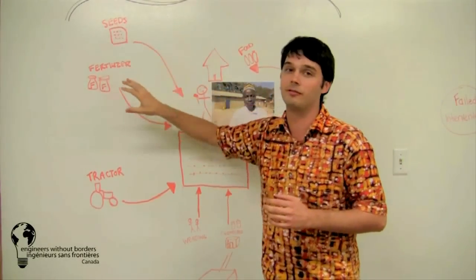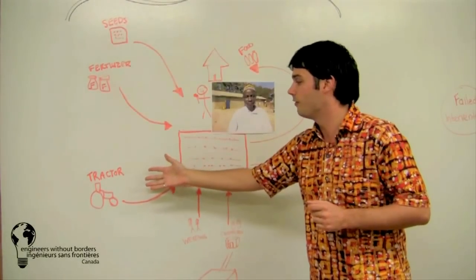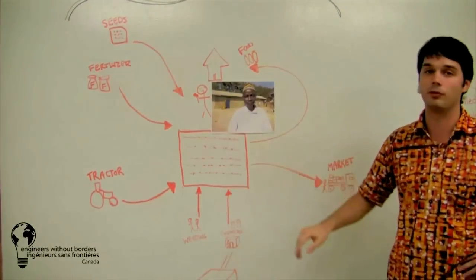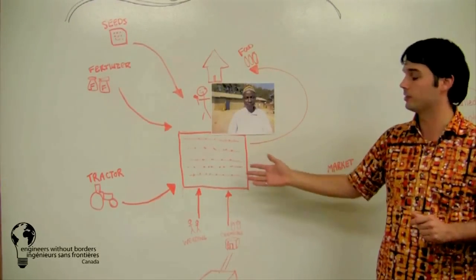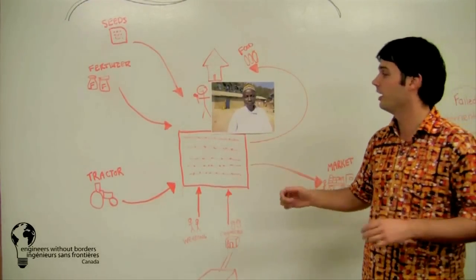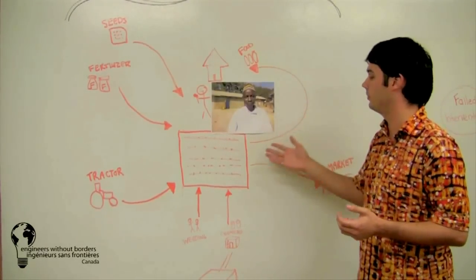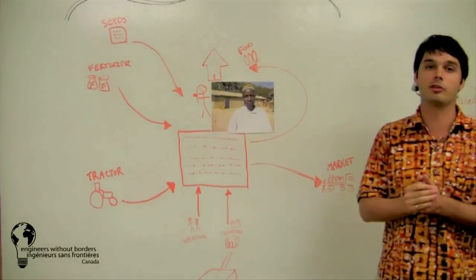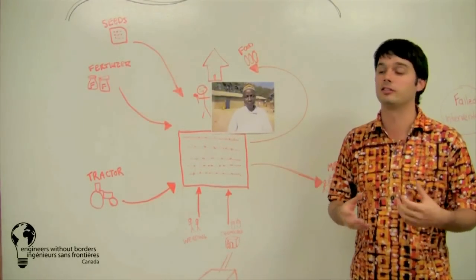He needs to be able to buy seeds and fertilizer at a good price and on time. He needs to find somebody to plow his field for him with a tractor. He needs to find labor to help him weed, and sometimes chemicals to kill different pests. And at the end of the day, with his crop that he's going to eat some of, he also needs to find a market, someone who can buy at a good price to give him the money to live his life.